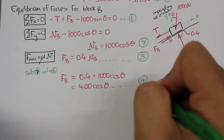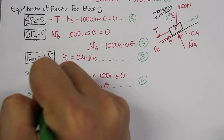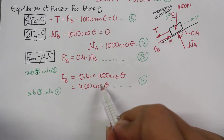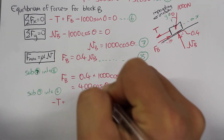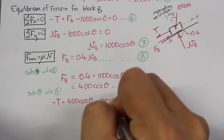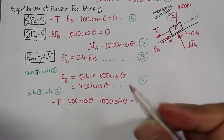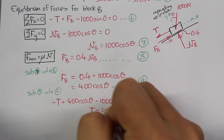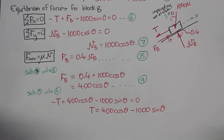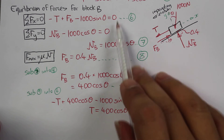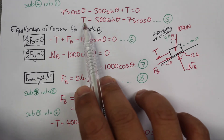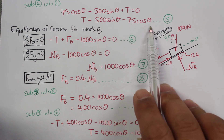We can substitute equation nine into equation six. Substituting, we get minus T plus 400 times cosine theta minus 1000 sine theta equal to zero. Rearranging to make T the subject: T equals 400 cosine theta minus 1000 sine theta. So now we have two equations for T. One is T equals 400 cosine theta minus 1000 sine theta, and the second from the previous part is T equals 500 sine theta minus 75 cosine theta.